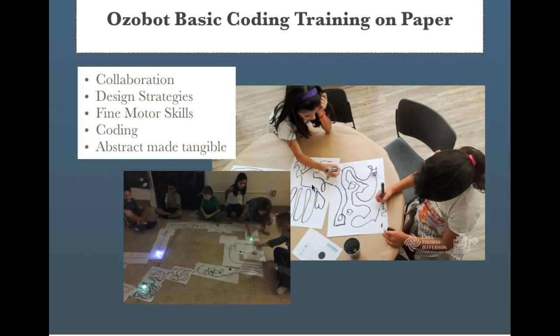I also noticed that the girls were talking about the drawings, the lines and the places on the map. They were giving them names. So they were using their imagination to develop stories about where their Ozobot was going.